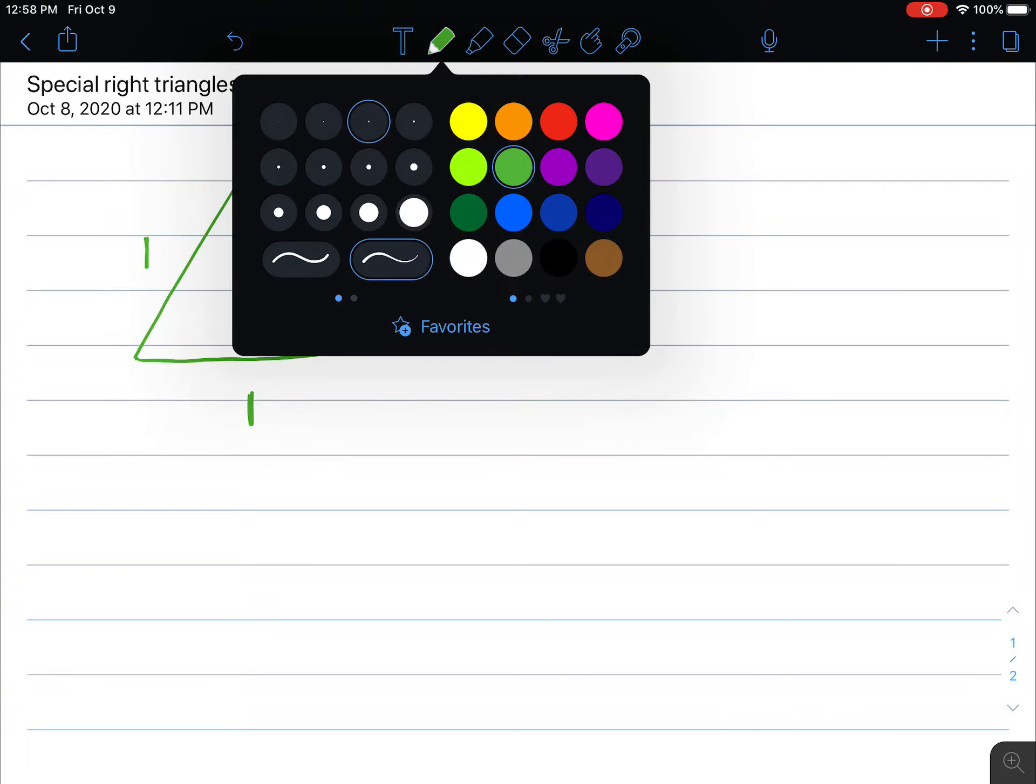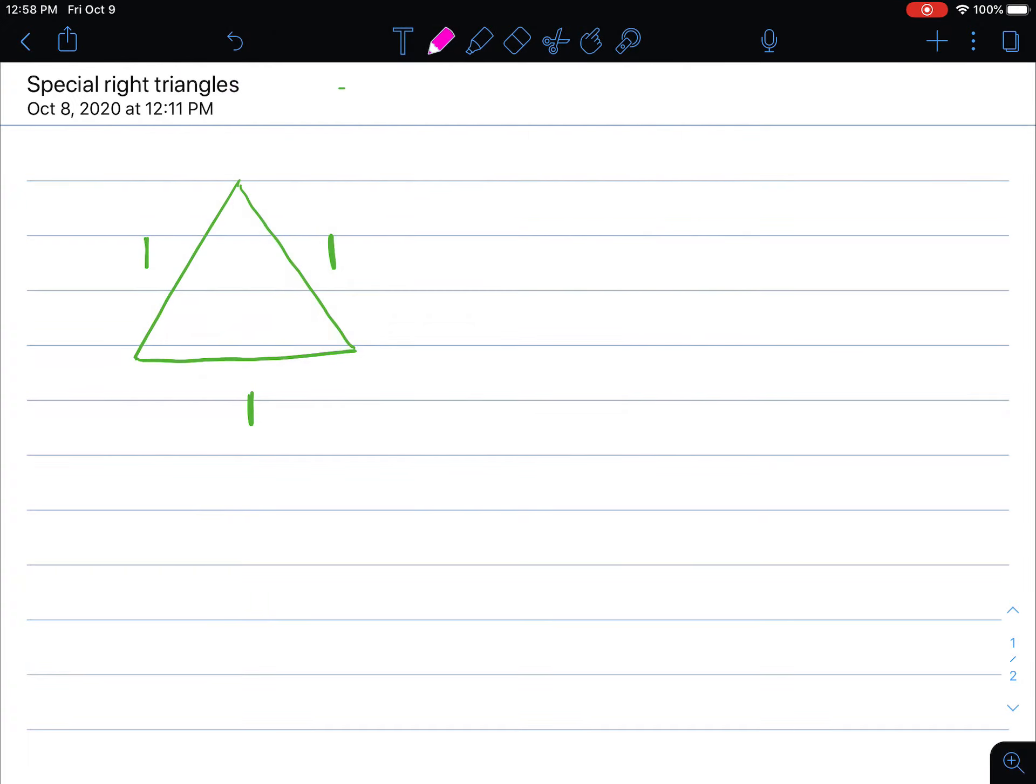We're going to talk about an equilateral triangle. So if it's an equilateral triangle we know that it's also equiangular and that each of these angles adds up to 60 degrees. What I'm going to ask you to do...